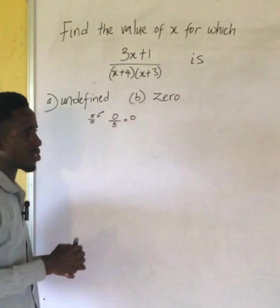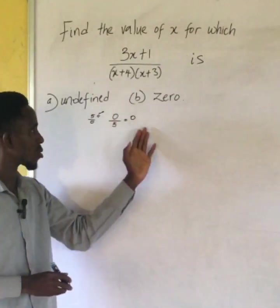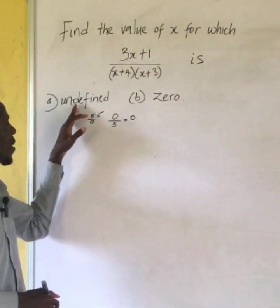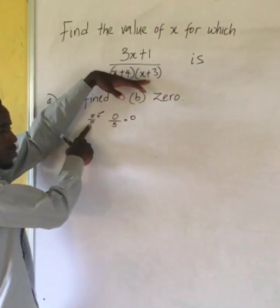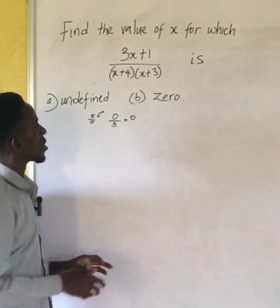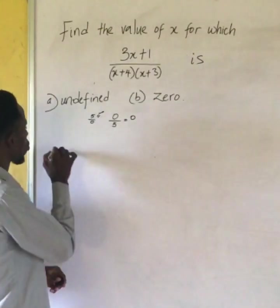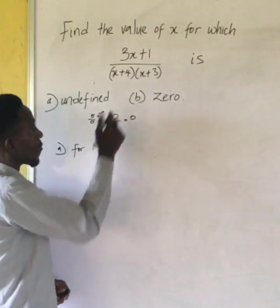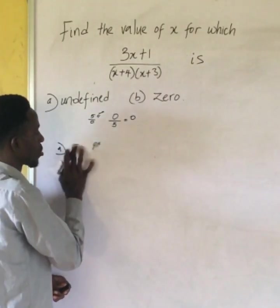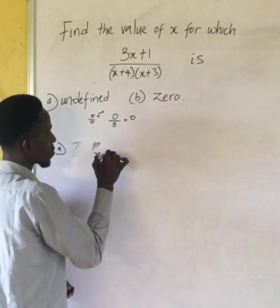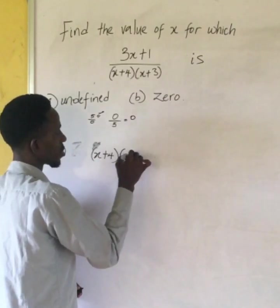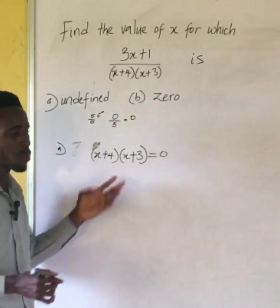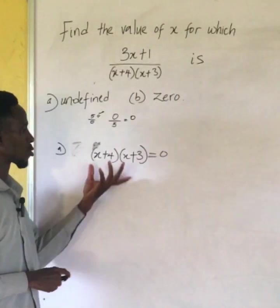Five over zero is undefined, whereas zero over five is going to give me zero. So you see the only way this expression can be undefined is when the denominator is zero. So whenever the denominator is zero, then the expression is undefined.